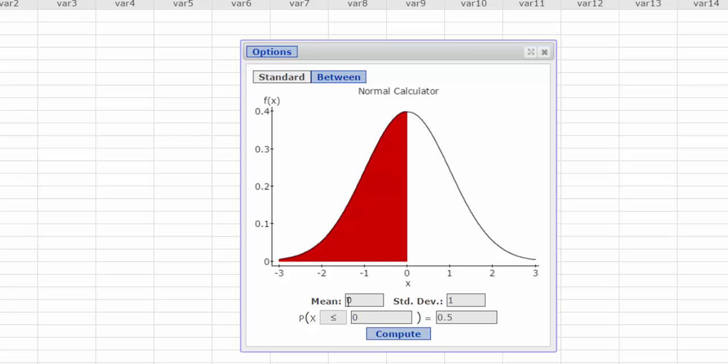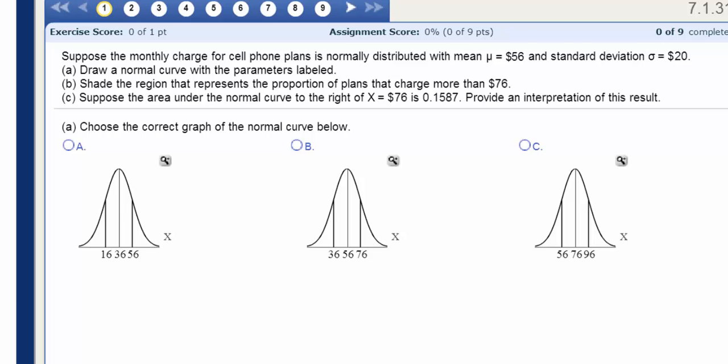Now, we're asked to enter a mean and a standard deviation. So it looks like our mean is $56 and our standard deviation is $20.